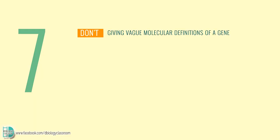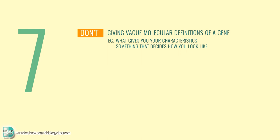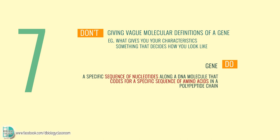Number 7: giving vague definitions of a gene, for example defining a gene as what gives you your characteristic or something that decides how you look. The correct definition of a gene should be a specific sequence of nucleotides along a DNA molecule that codes for a specific sequence of amino acids in a polypeptide chain.